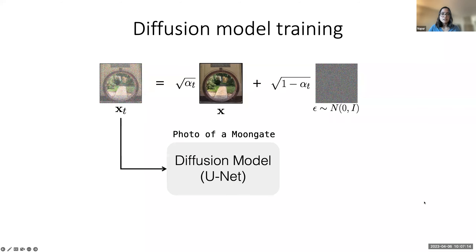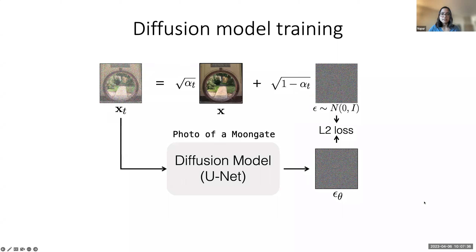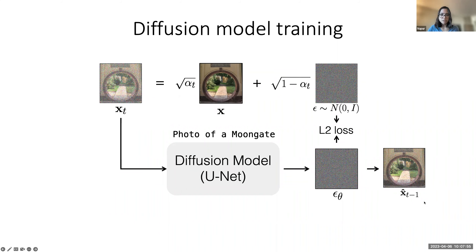During training, we uniformly sample time step t, create the noisy version of the image using this equation, where we are sampling a Gaussian noise epsilon, and we input this noisy image along with its corresponding text prompt into the model. Our goal is to predict the noise that was originally added to the image. The training loss consists of minimizing the mean square error between the original noise and predicted noise. Once we know this predicted noise, we can use it to obtain the best estimate of xt-1. During sampling, we query the diffusion model multiple times to generate an image starting from Gaussian noise to a clean image.